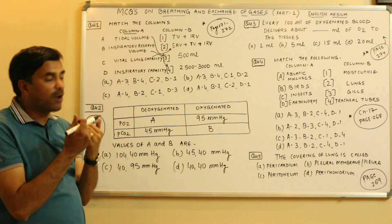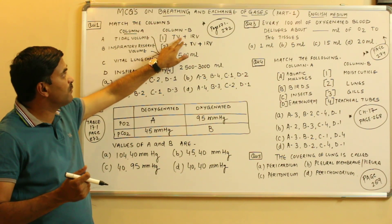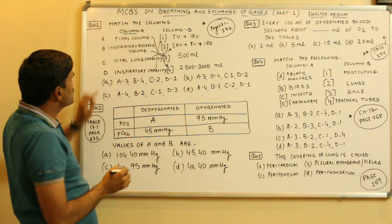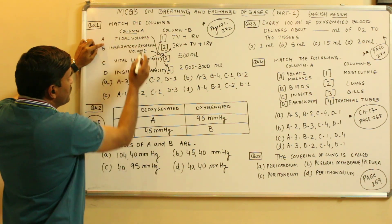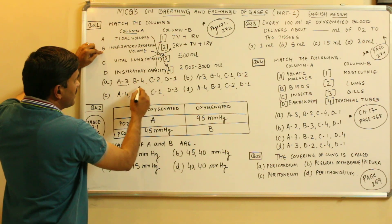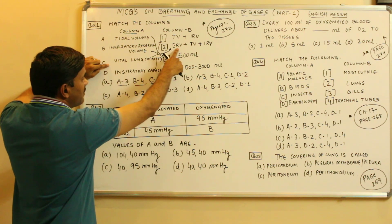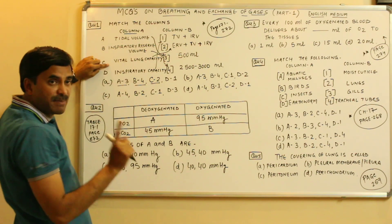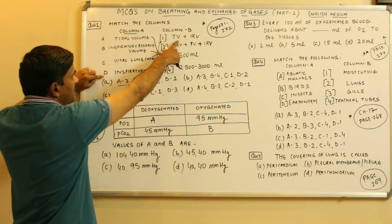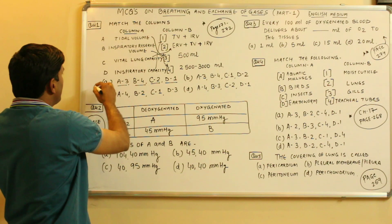The volume of air taken during normal breathing is tidal volume (TV), and the volume of air taken in during forceful inspiration is inspiratory reserve volume (IRV). So D is matched with 1. The answer is: tidal volume 500 ml — A matched with 3; IRV 2500–3000 ml — B matched with 4; vital lung capacity matched with 2 (ERV + TV + IRV); and inspiratory capacity matched with 1 (TV + IRV). Question number one answer is A.